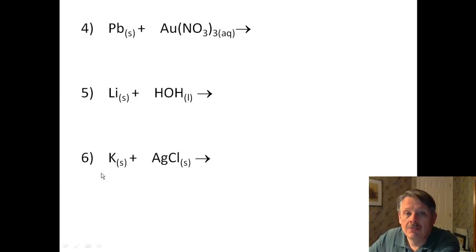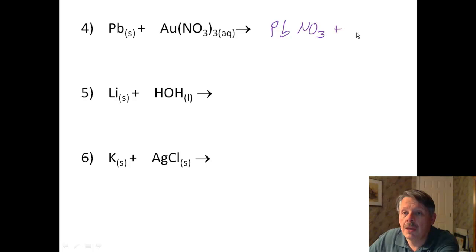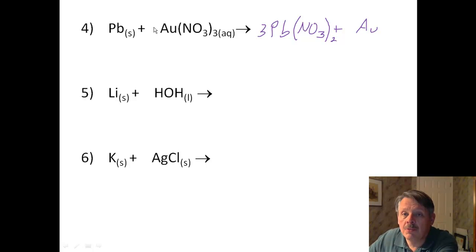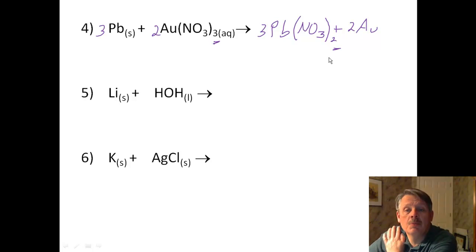Number 4: lead and gold. Gold is at the bottom of the activity series, so lead is going to replace it. We're going to have lead nitrate and gold. Lead is a 2+ charge on our activity series, so that means we have 2 nitrates. To balance, we use a 3 and a 2 — 2 golds and 3 leads — because we have 3 nitrates on the left and 2 nitrates on the right, so we go up to 6: 2 times 3 and 3 times 2.